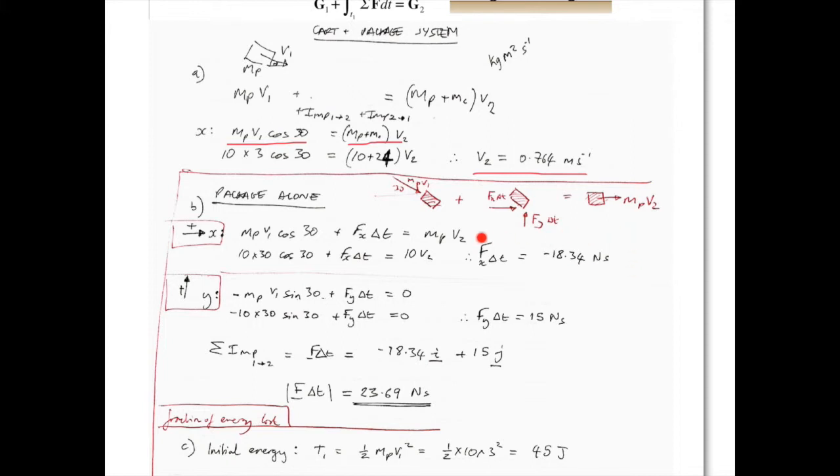And solving directly, this gives us the x-component of the impulse. This is negative, so actually it's going from right to left.